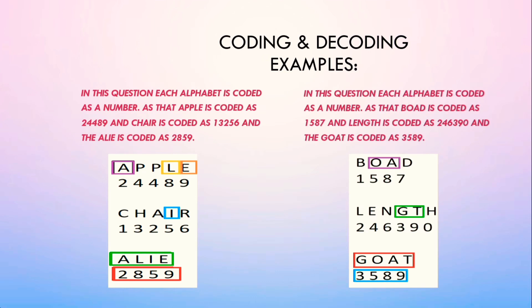In this question each alphabet is coded as a number. Board is coded as 1587, length is coded as 246390, and goat is coded as 3589.